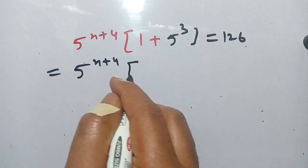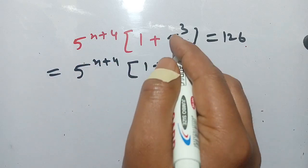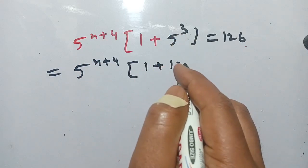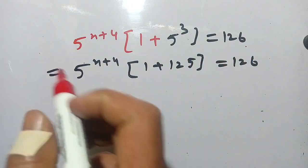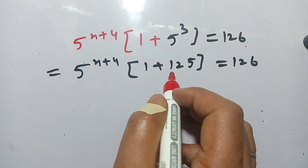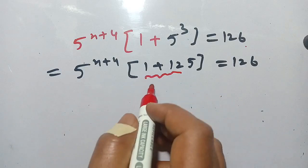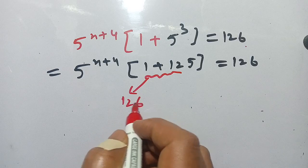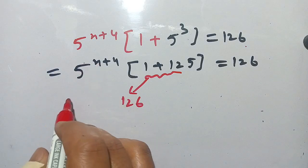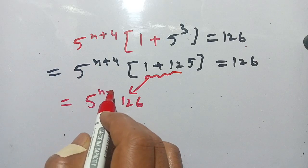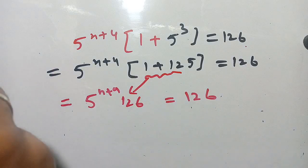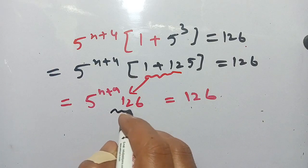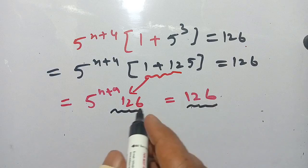In the next step we get 5 power n+4 times (1 plus 5 power 3) is equal to 126. Now we have, add this: 125 plus 1 becomes 126, and 5 power n+4 as it is, then it is equal to 126.